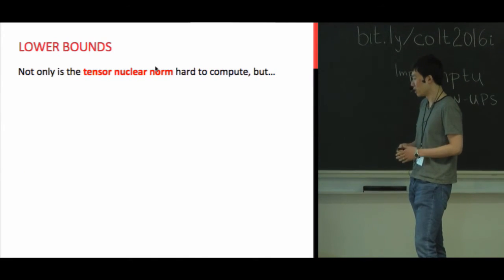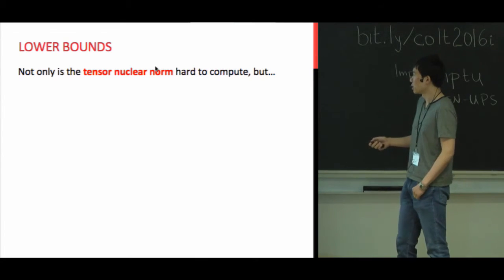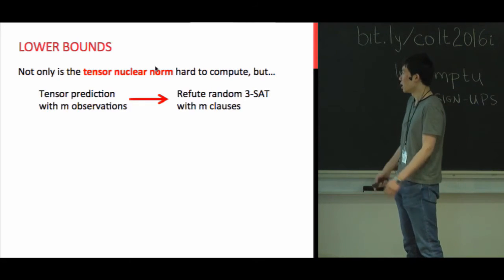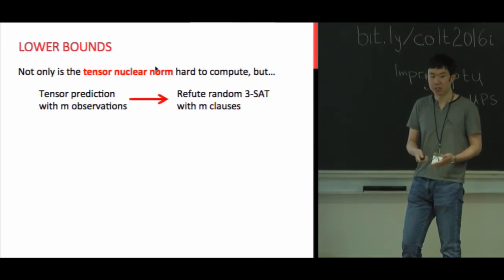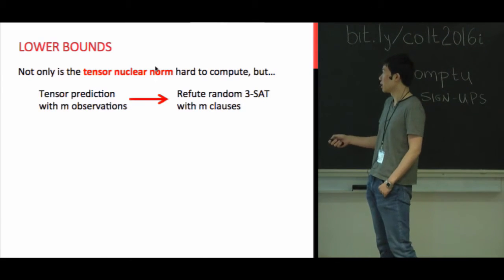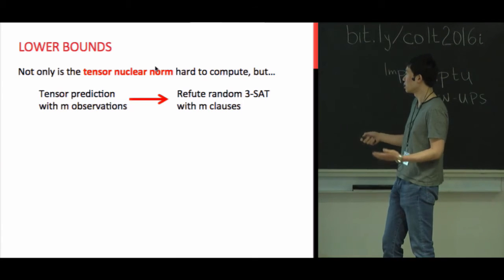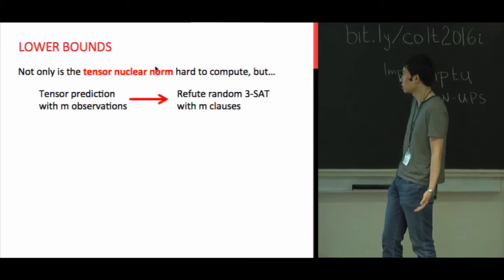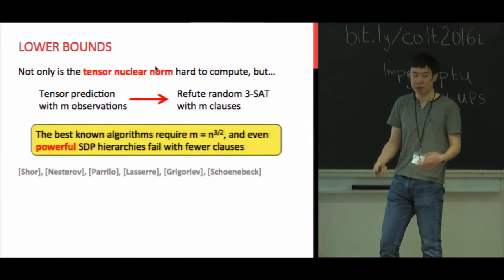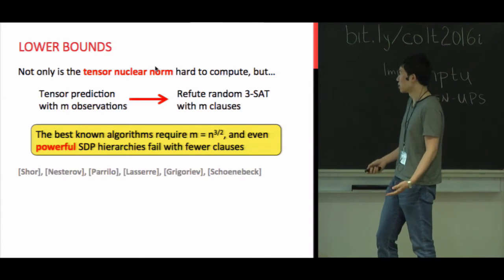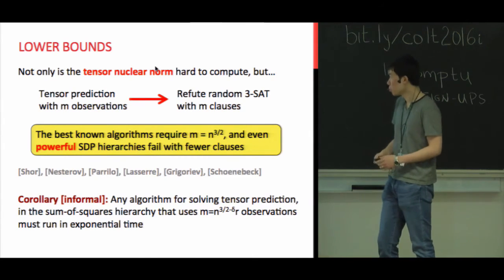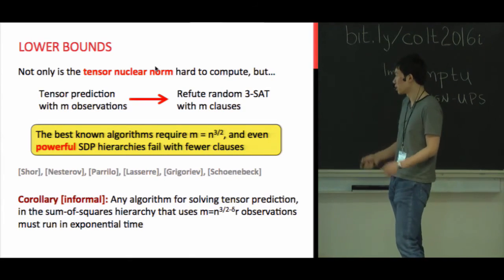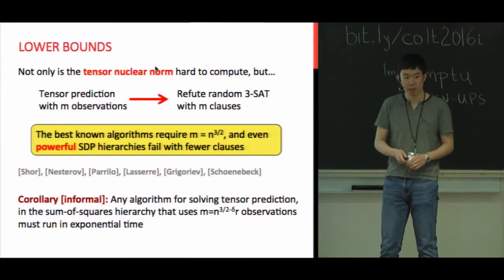Before describing the algorithm, let's look at lower bounds. Not only is tensor nuclear norm hard to compute, there is a more fundamental difficulty. It turns out that if you can do tensor prediction with M observations, this can be used to refute a random 3-SAT instance with M clauses. We have no idea how to do that for M less than N^(3/2), which means the N^1.5 result is almost tight — you cannot do tensor completion with fewer than N^1.5 entries.